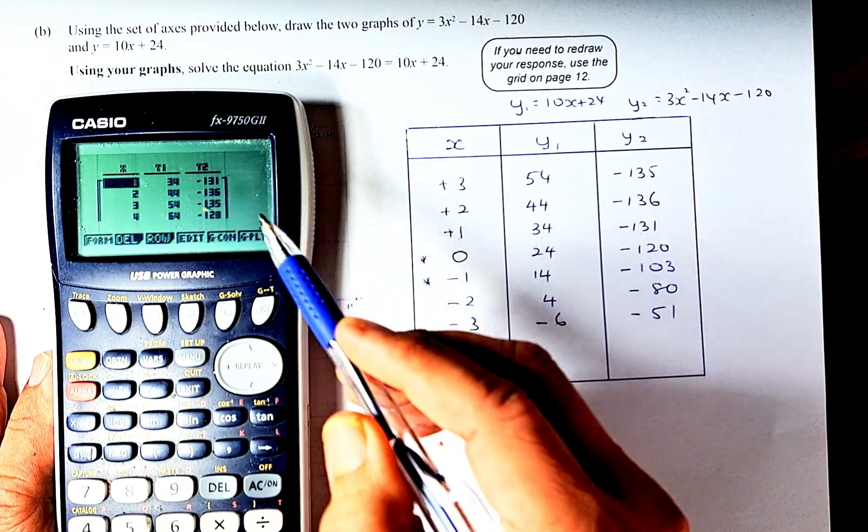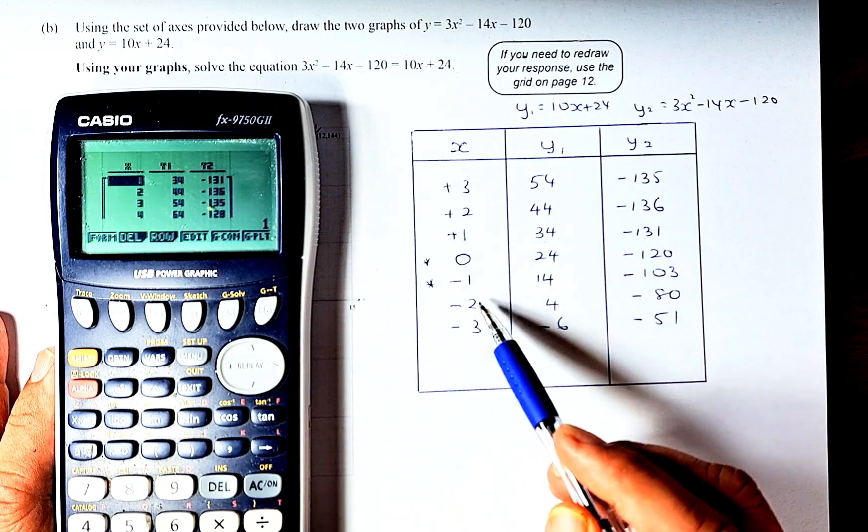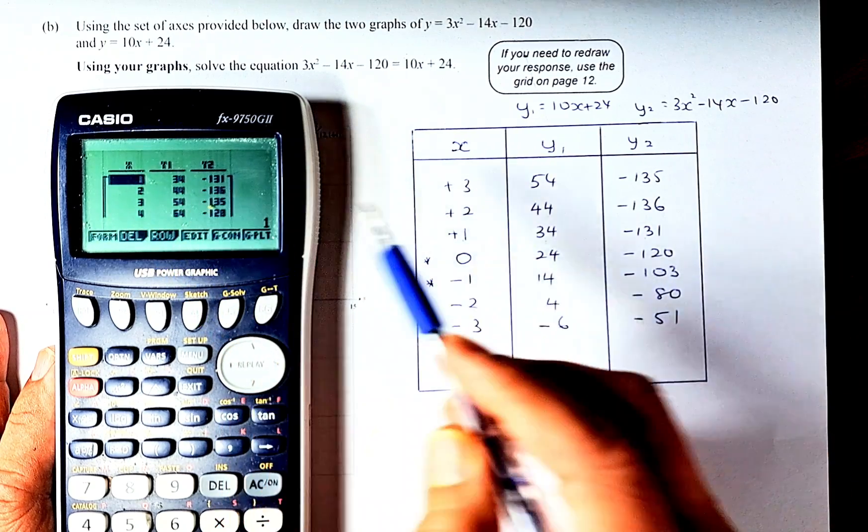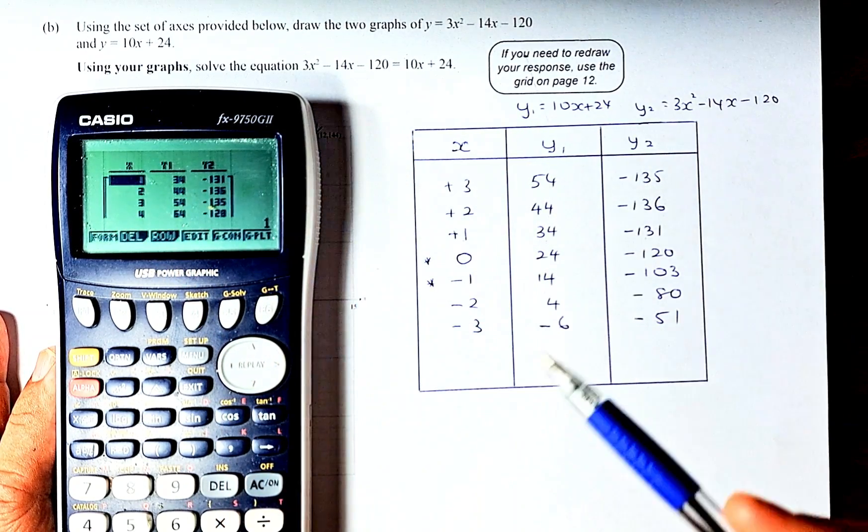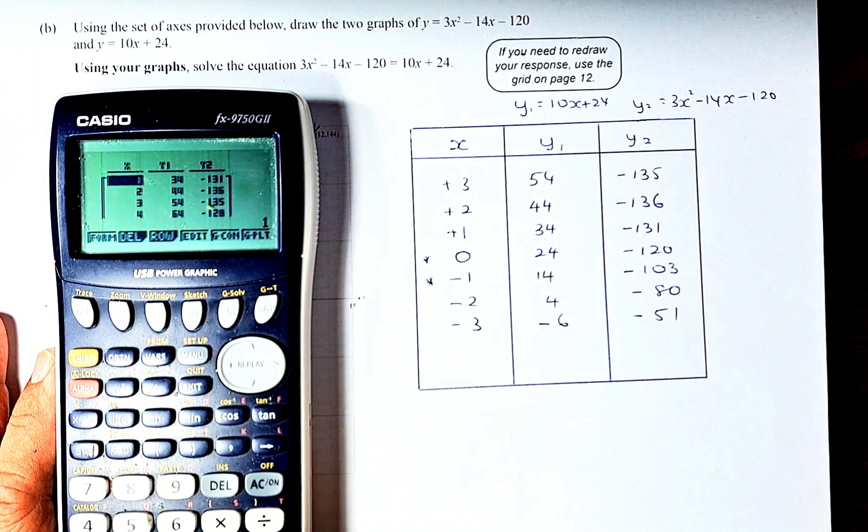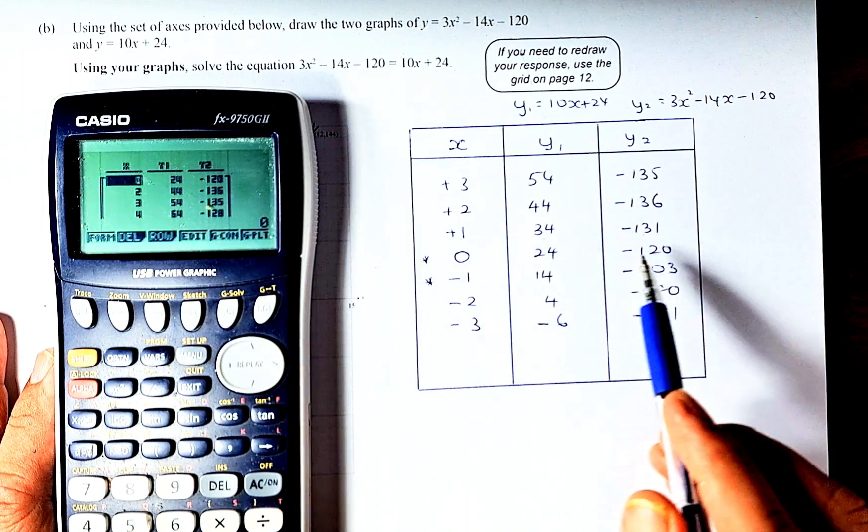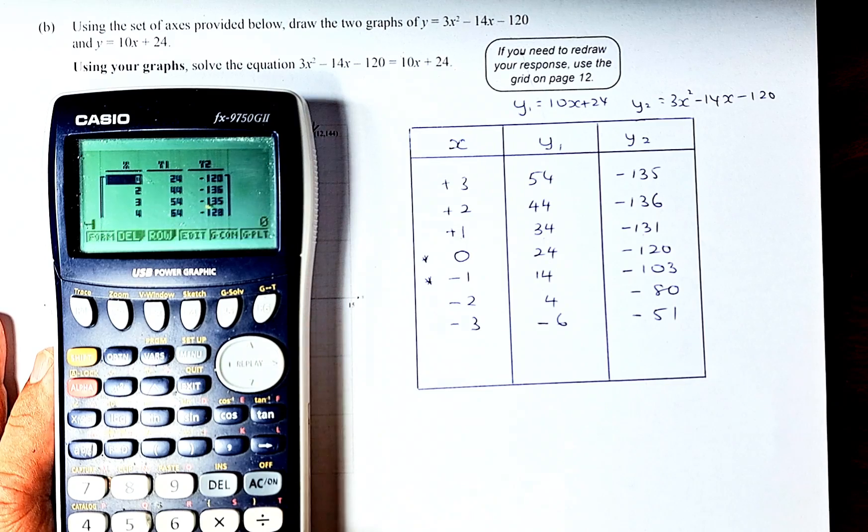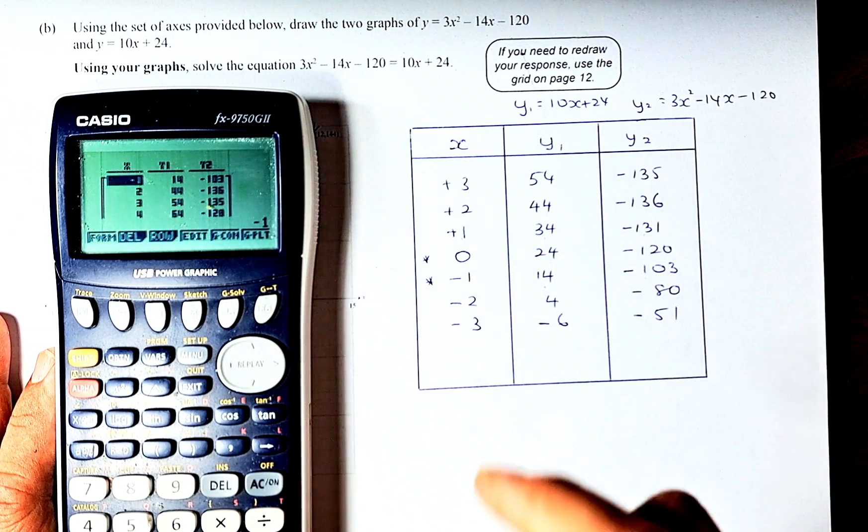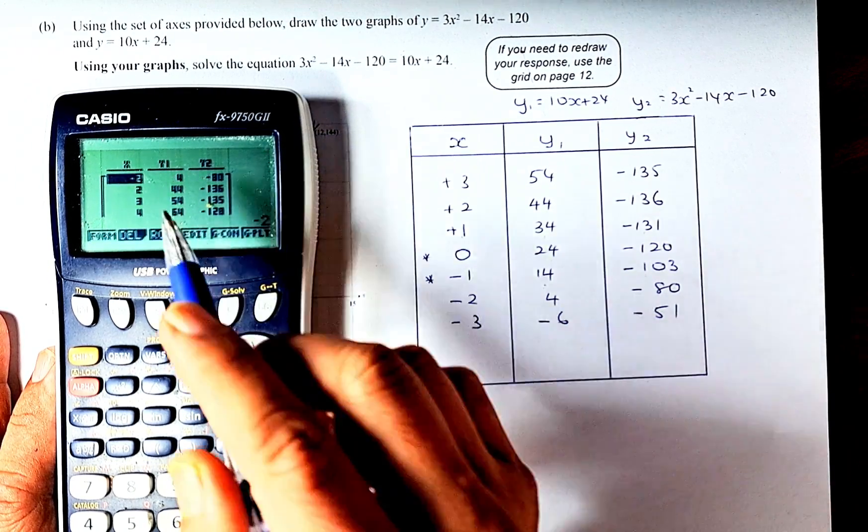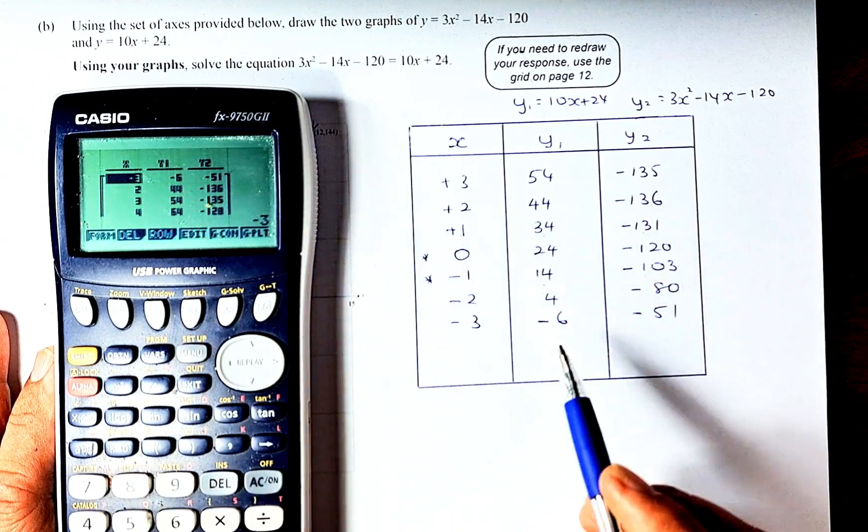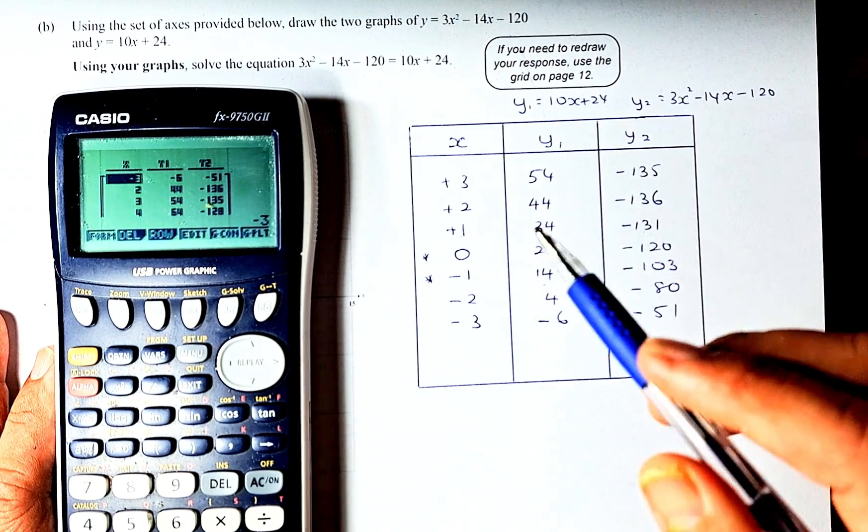When x = 2, y₁ = 44 and y₂ = -136. When x = 3, y₁ = 54 and y₂ = -135. We need values on the left side of the graph too. When x = 0, y₁ = 24 and y₂ = -120. When x = -1, y₁ = 14 and y₂ = -103. When x = -2, y₁ = 4 and y₂ = -80. When x = -3, y₁ = -6 and y₂ = -51. Now we have a complete table to plot these points onto the graph.